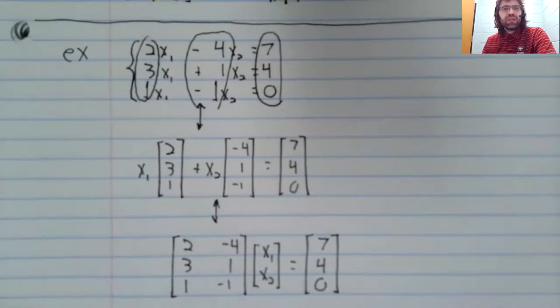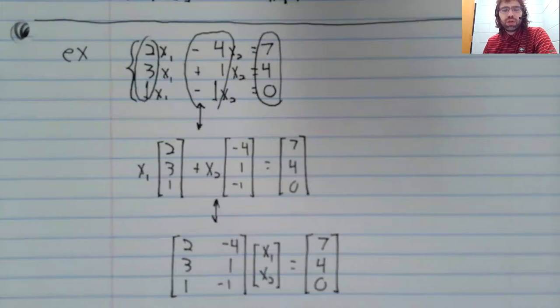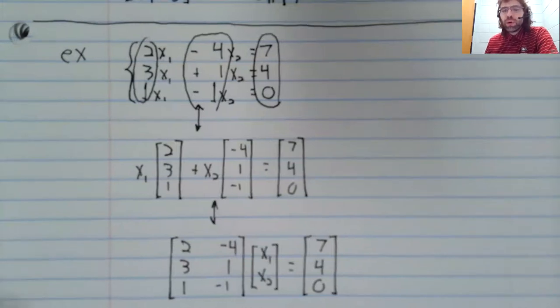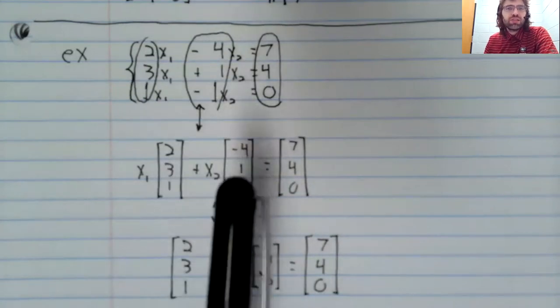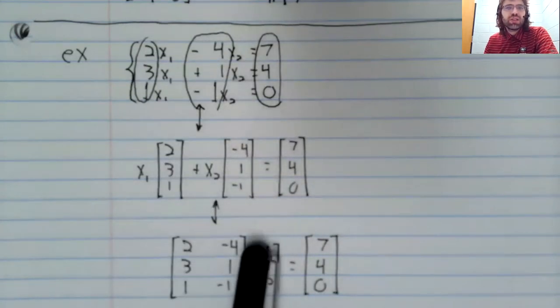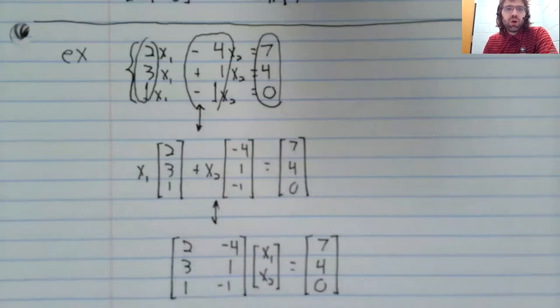Three different ways of approaching the same problem, and as a consequence, equations that look like this, equations that look like this, and equations that look like this are all solved the same way. They're all solved using Gauss-Jordan elimination on an augmented matrix.